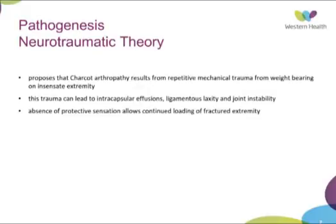The other neurovascular theory is that there's increased peripheral blood flow resulting from an autonomic sympathectomy of some unknown cause. That autonomic sympathectomy removes the normal regulatory mechanism to control blood flow, eventually leading to dysfunction in the AV shunting and further dilatation. With more blood flow, you have increased osteoclastic activity, and osteoclasts absorb bone — demineralising it and making it more susceptible to subluxation, fracture and collapse.